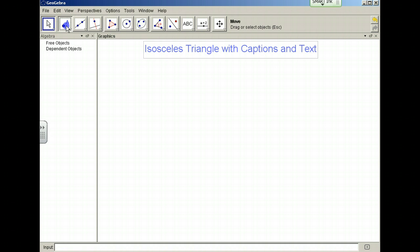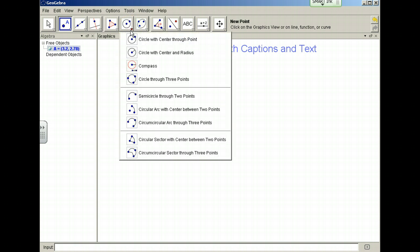We'll start with a point A, which will be the vertex of our isosceles triangle, and then we will choose a circle with center through a point.